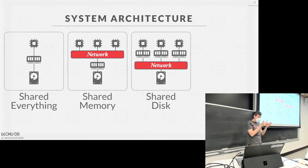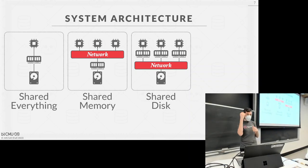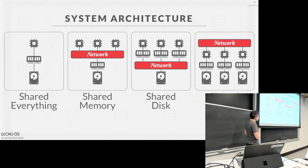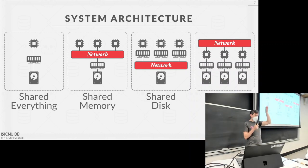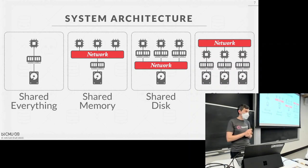What is more common in databases is shared disk, where you have separate nodes with their own local CPUs and local memory, but the disk is shared amongst all of them via some network fabric. If one CPU writes something to disk, the other CPU can see it when it reads. This is super common now, especially in the cloud. Pretty much any modern OLAP system is going to use this — think of S3. There's a bunch of buckets, a bunch of compute nodes pulling data out of S3 into their local memory to process and produce query results.